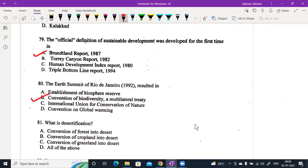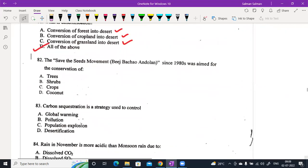What is desertification? Conversion of forest into desert, conversion of cropland into desert, and grassland. Any or all of the above. The Save the Seeds movement, Beej Bachao Andolan, since 1980 was aimed at the conservation of crops. Carbon is a strategy used to control global warming.